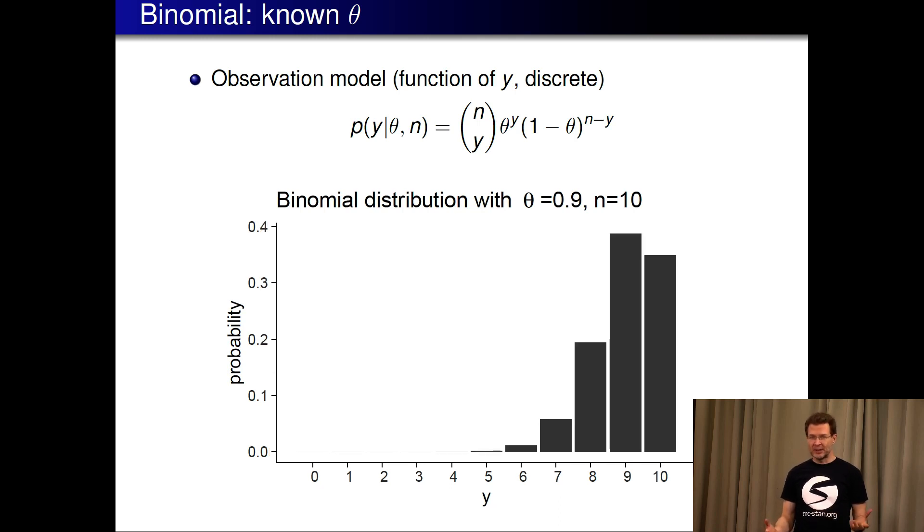Then the theta might be something else. If we would have here much more reds than yellows and theta would be 0.9, and we would pick ten times a chip, it would be more likely to get these high count values and very unlikely to get very low count values. So far we have been describing with this model this aleatory uncertainty observation model or statistical model for the events if we know the model and the model parameter.